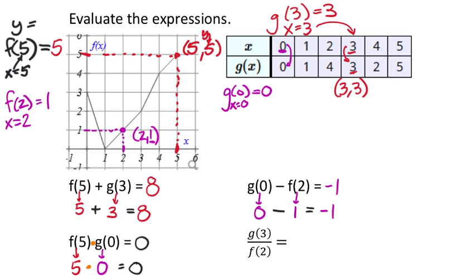Next up, we have g of 3. So I'm going to rewrite this. But g of 3, we know, is 3. So I'm going to take this g of 3, I'm going to replace it with the value of 3, which is what it is. And then I can see just above this that f of 2 is 1. So that would be 3 over 1, which simplifies to 3. That would be my answer. So we found all four answers there. We got 8, negative 1, 0, and 3.